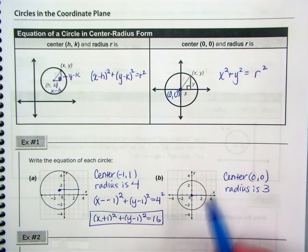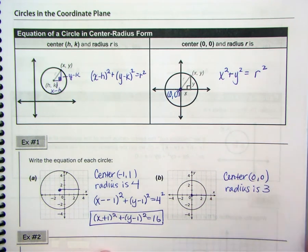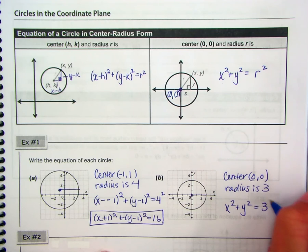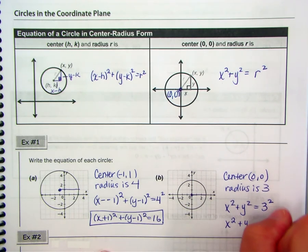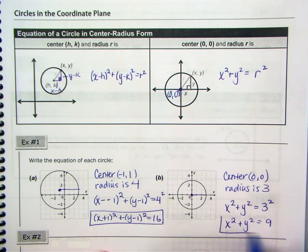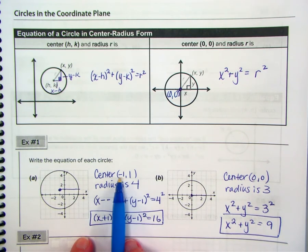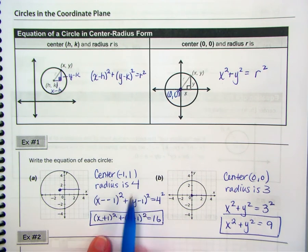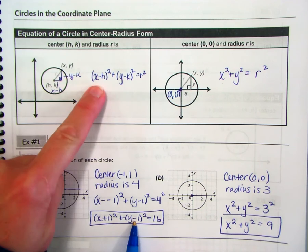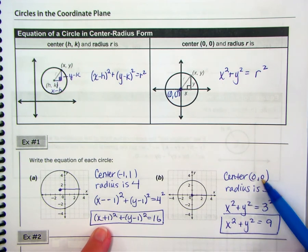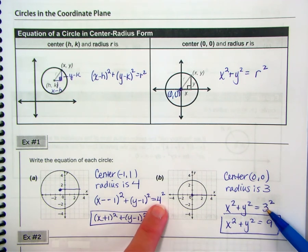Subtracting negative 1 gives us x plus 1, so our final answer is x plus 1 squared plus y minus 1 squared equals 16. For the circle centered at the origin, we don't subtract h because it's 0, so it ends up being x² + y² equals radius squared, which is 3 squared. Final answer: x² + y² = 9. Pay close attention — when the center has a negative x-value, it becomes positive in the equation, and vice versa. The last number is always the radius squared.